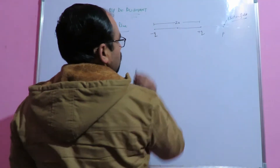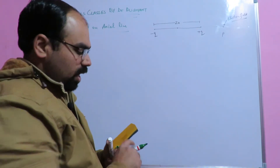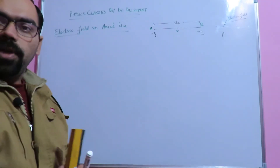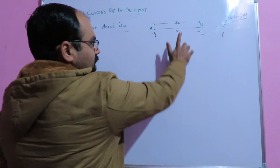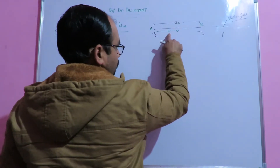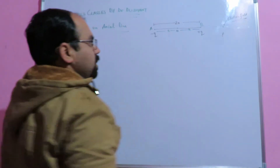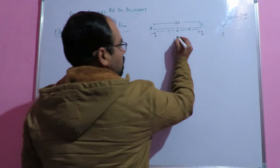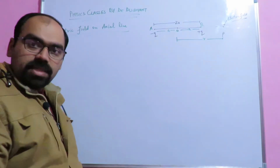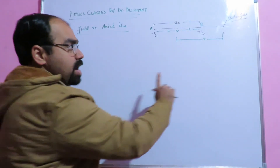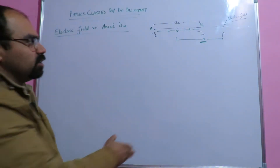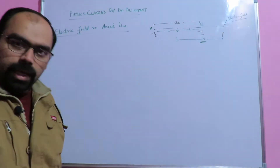Let's consider the center of this dipole, point O. We have the dipole with endpoints A and B, and O is the center. The distance from O to each charge is 'a'. Point P is at distance R from the center O of the dipole, and we have to find the value of electric field at this point P.